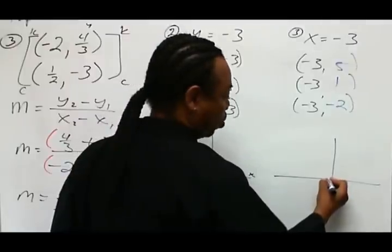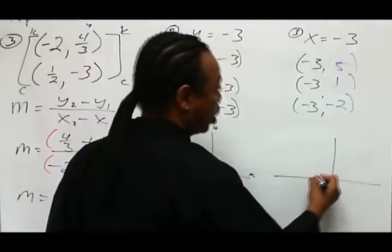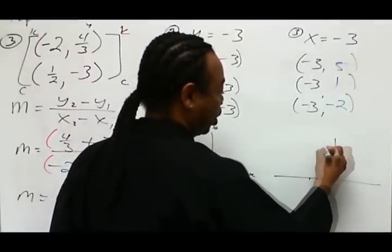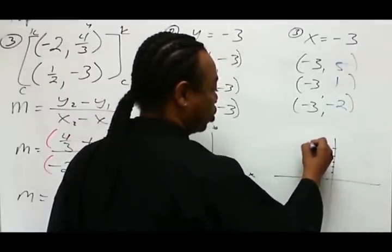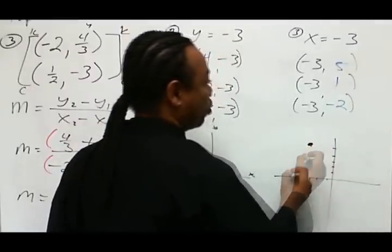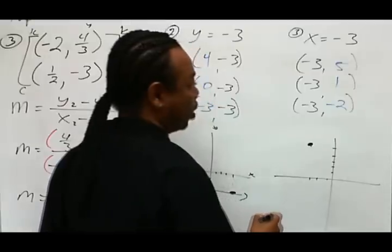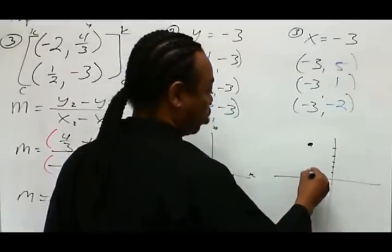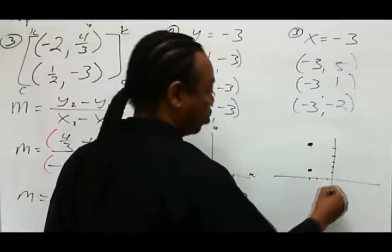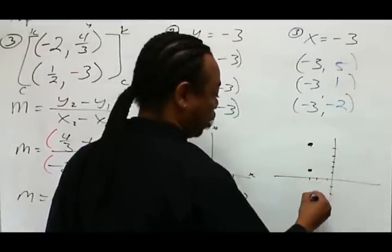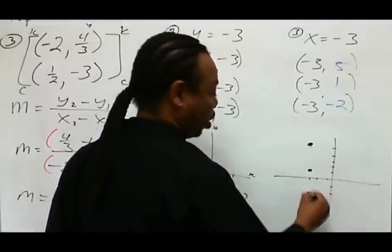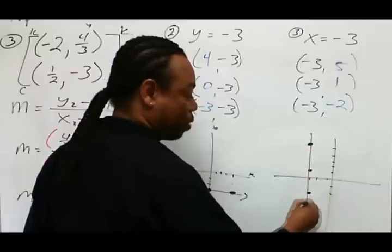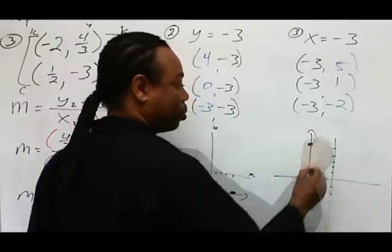So the point (-3, 5) is here, (-3, 1) is about here, and (-3, -2) is there. It does form a vertical line.